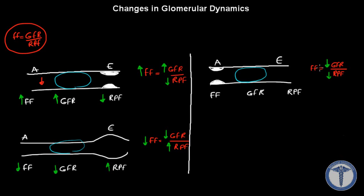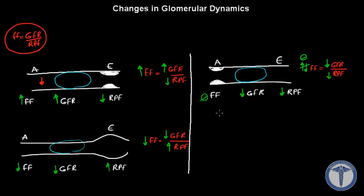Now the problem is: what happens to filtration fraction? We said renal plasma flow and filtration fraction are opposite, so if renal plasma flow is decreased, filtration fraction would increase. But we also said filtration fraction and GFR are exactly the same, so if GFR is decreased, filtration fraction must be decreased too. Which is it? Neither — filtration fraction will remain constant. Since GFR and renal plasma flow both decrease — pointing in the same direction — filtration fraction is constant.